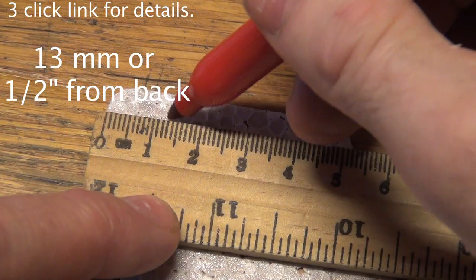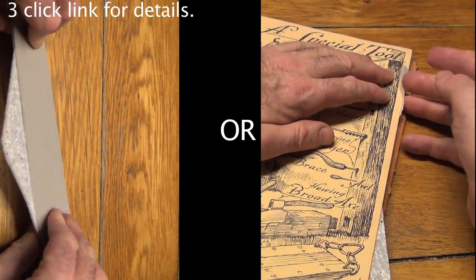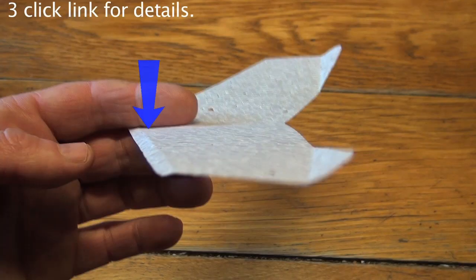Measure thirteen millimeters or half an inch from the back. Remember that when finished, the front will bend down and the back will bend up.